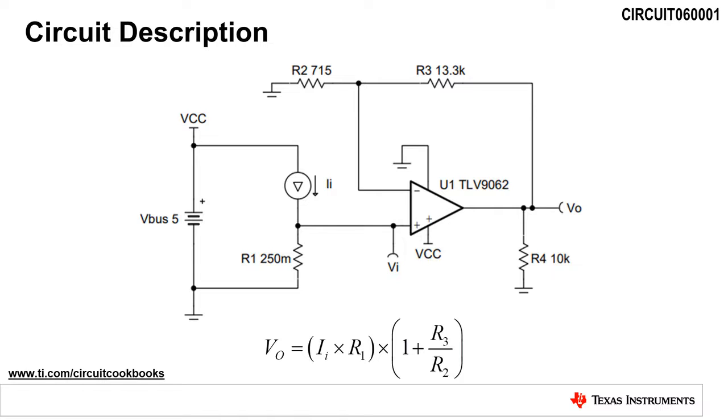Unidirectional means that the load current, I sub I, only flows in one direction.